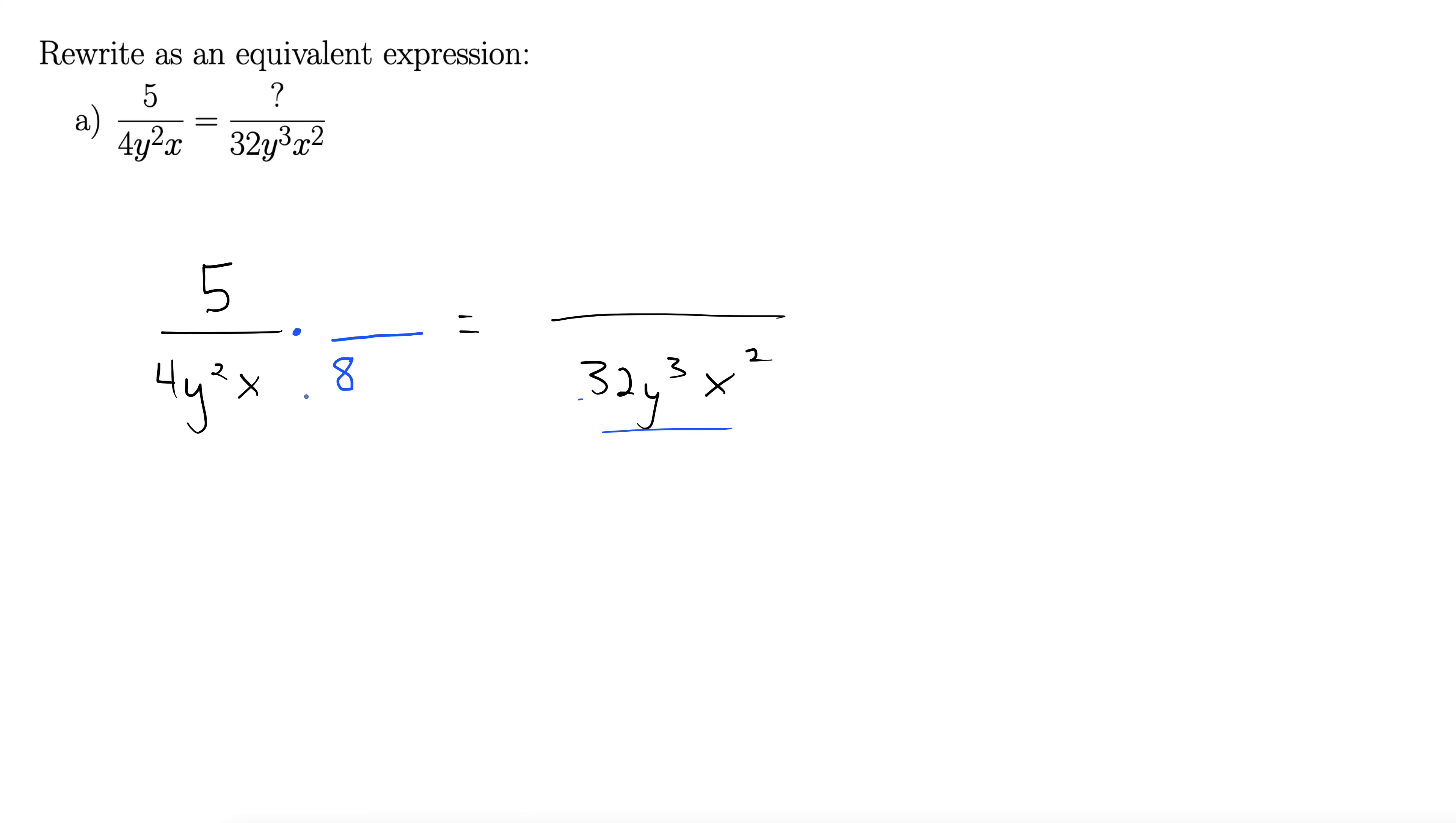Similarly, we have a y squared but we need a y cubed so I'm going to add in a single y because y squared times y is y cubed. And finally we have an x but we need an x squared so I'm going to add in one more x.